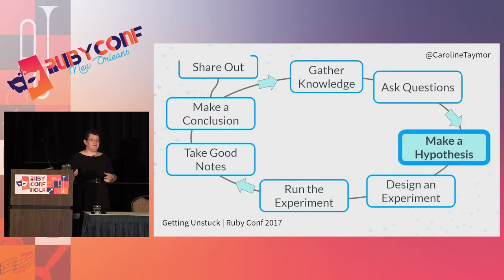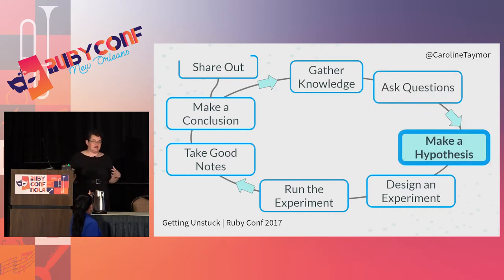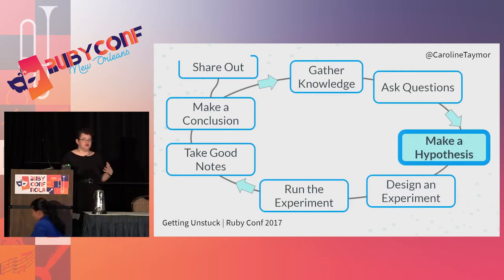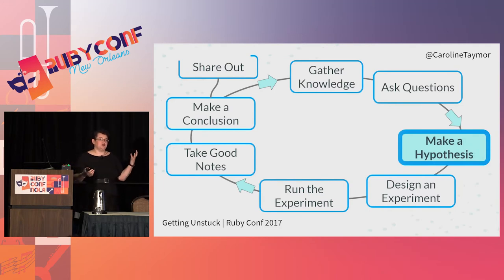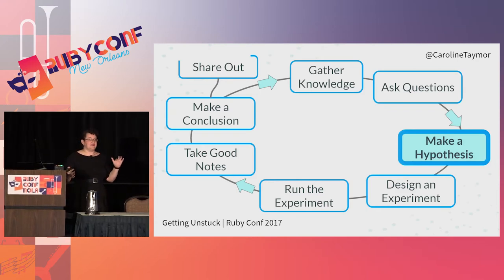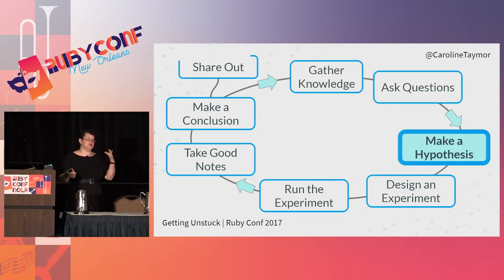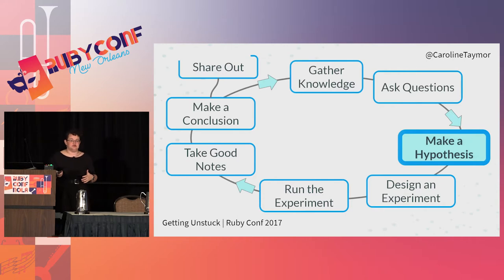Then you make a hypothesis — just an educated guess, a statement about what you think might be the answer to your question. When you're doing scientific research, you phrase your hypothesis as a null hypothesis — the statement that there's no correlation between two variables — and then you want to disprove it to provide evidence that there is some statistical correlation between two variables.